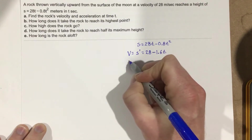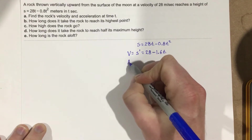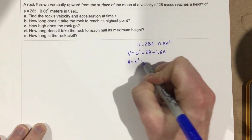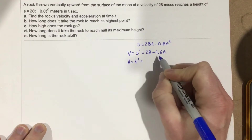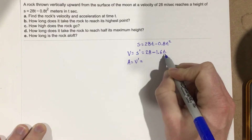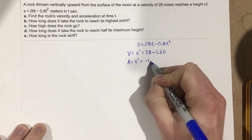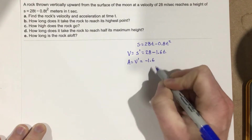Now we find the acceleration, which is the derivative of the velocity equation. That's just going to give us negative 1.6.